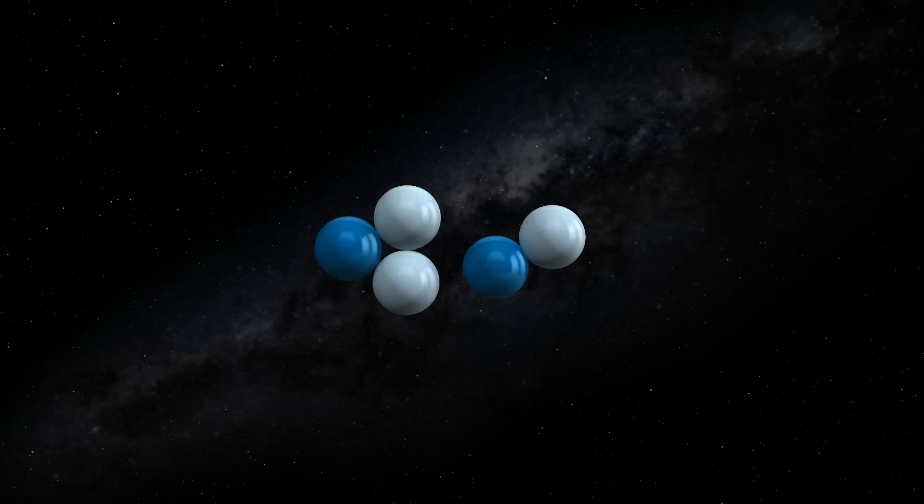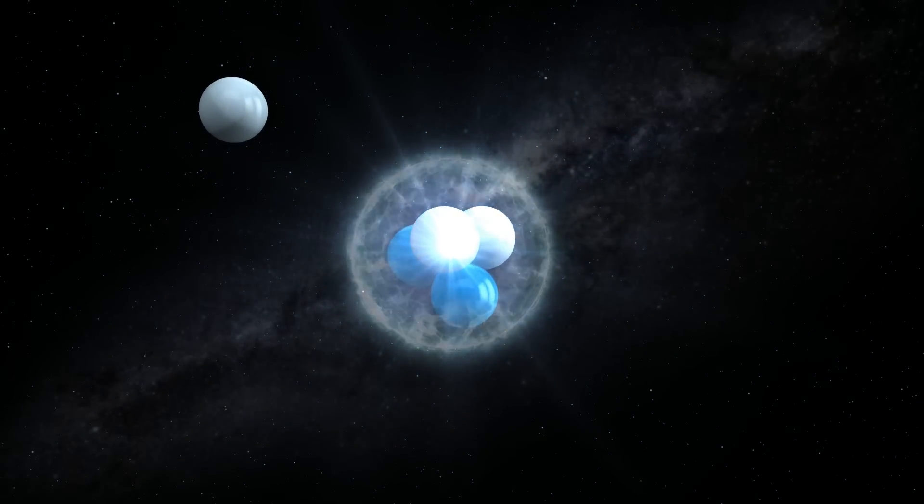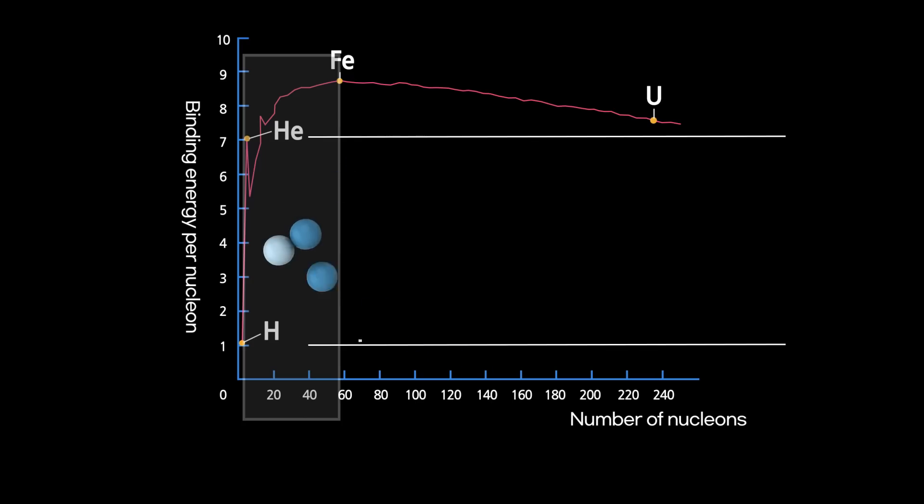When you fuse heavy hydrogen and tritium, you get helium and energy is released from one neutron. When the element turns to helium, the bond energy per nucleon increases. The mass in turn reduces by the amount energy increased, and the reduced mass releases energy.